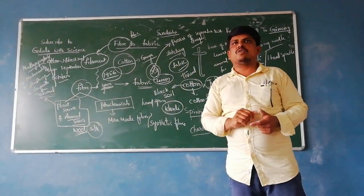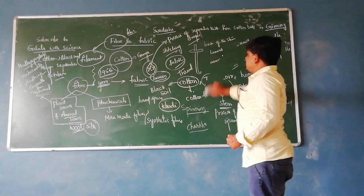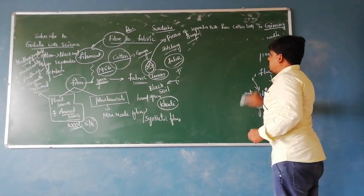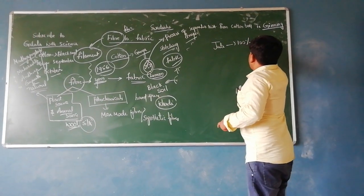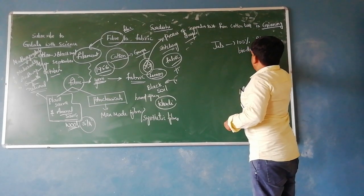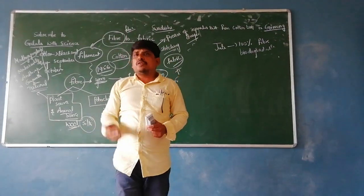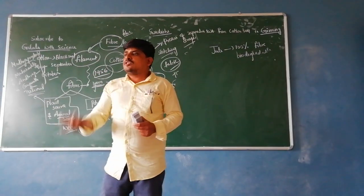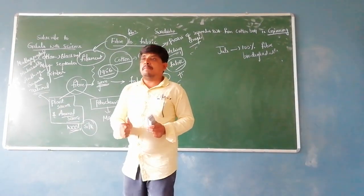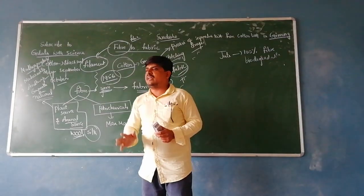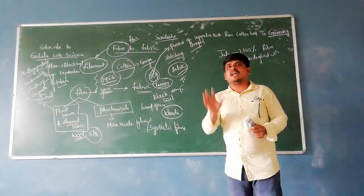Cotton and jute are important plant fibers. Jute is mainly grown in West Bengal. Jute is 100% biodegradable. It does not cause pollution. Unlike plastic, which takes thousands of years to decompose, jute decomposes naturally — making it a natural and biodegradable product.